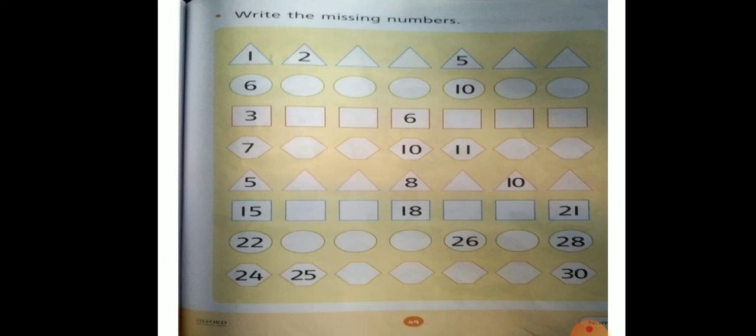Then the after number of three is four, you will write four. Next number of four is five, already written in your book. The after number of five is six, you will write here.